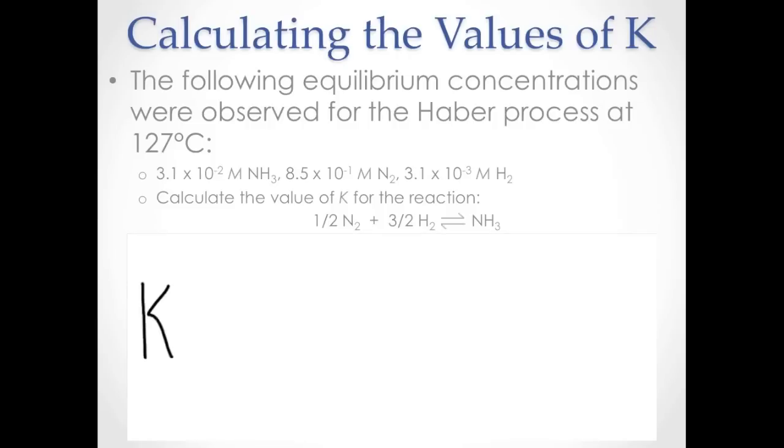By using the law of mass action for this reaction, substituting the same concentrations and calculating the value of the rate constant, we see that K double prime is equal to the original K to the 1 half power, because each of the coefficients are 1 half times what they were.